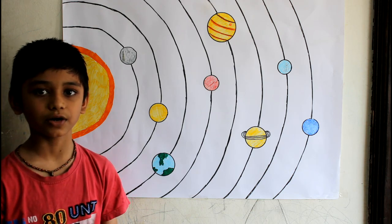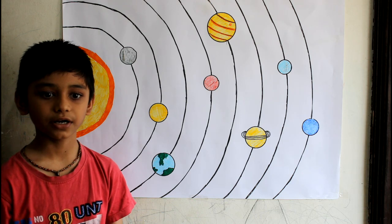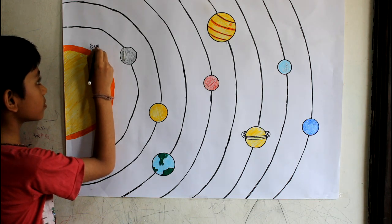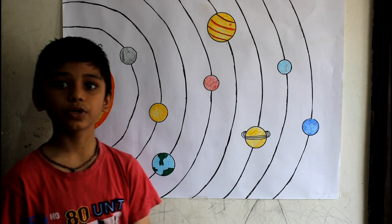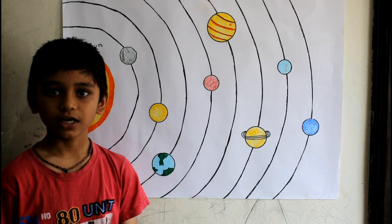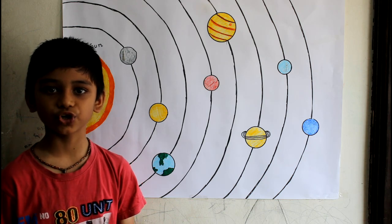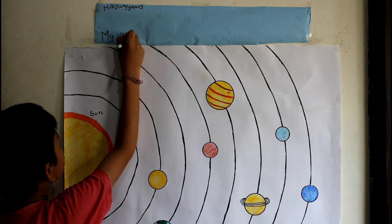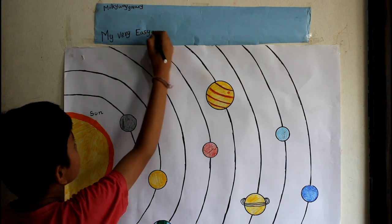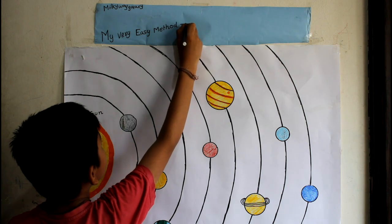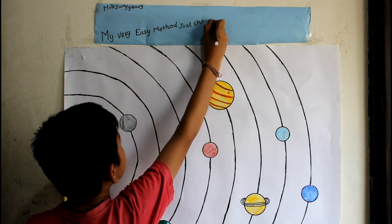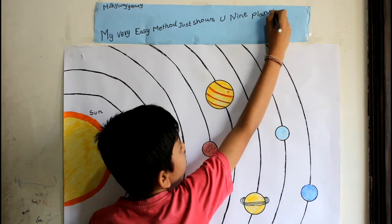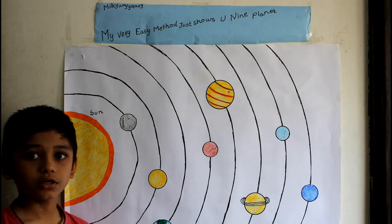These planets rotate and revolve around the Sun. To remember these planets, we make a sentence: 'My very easy method just shows you 9 planets.' This is a very easy method to remember the planets.